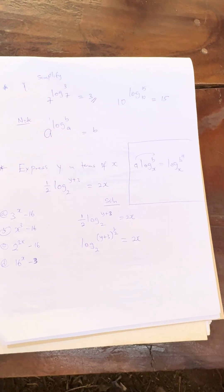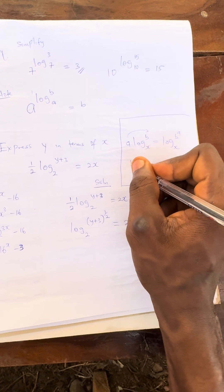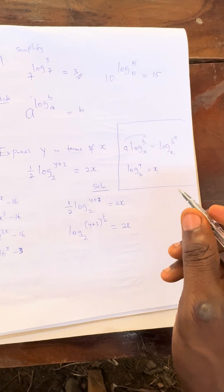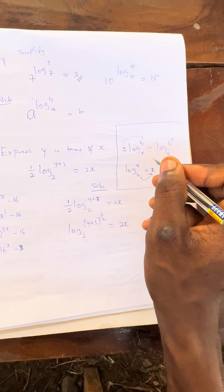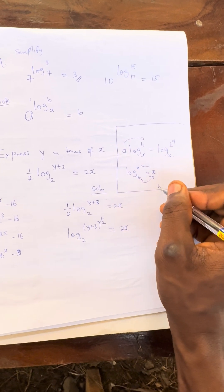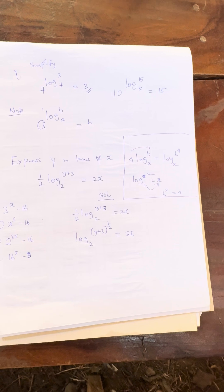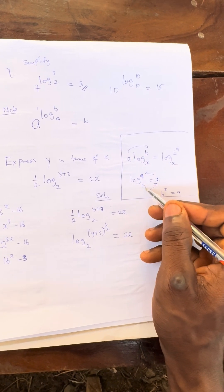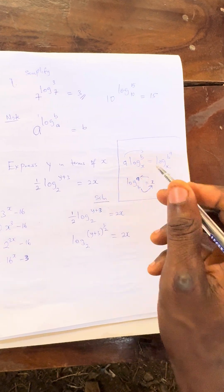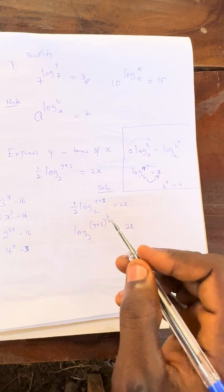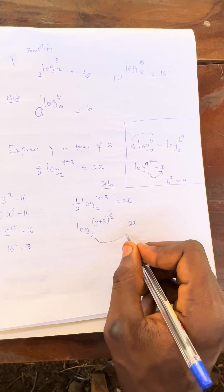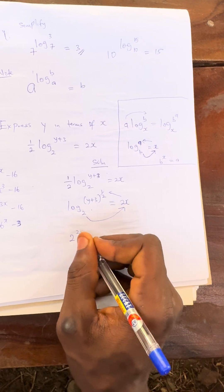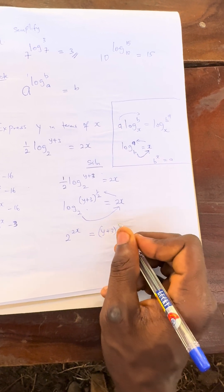There is another log rule that says if you have log of A base B equals x, you can cancel the log by writing B raised to the power x equals A. Following that principle here, we get 2 raised to the power 2x equals (y plus 3) raised to the power 1 over 2. To eliminate the 1 over 2 power, multiply all powers by 2, giving 2 raised to the power 4x equals y plus 3.